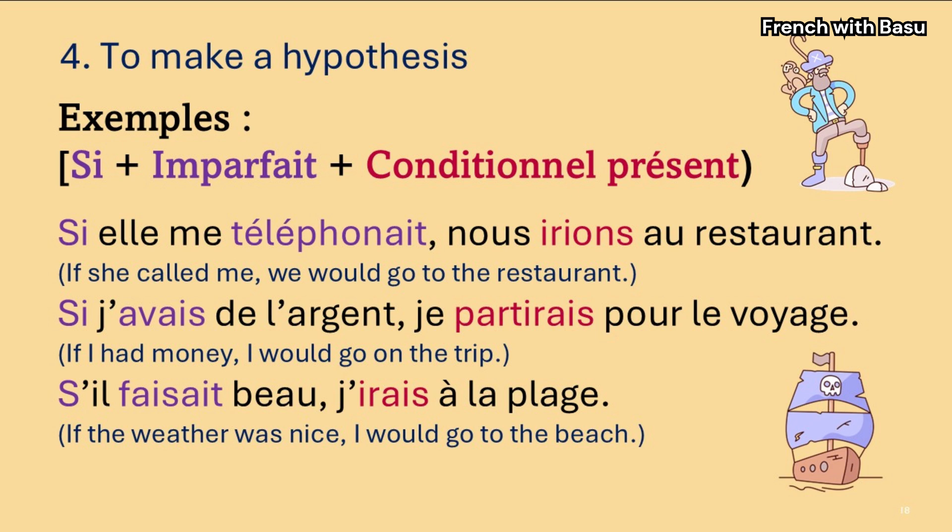Fourthly, and very importantly, we use conditionnel présent to make a hypothesis in the present or in the past. In the present: si + imparfait + conditionnel. For example: Si elle me téléphonait, nous irions au restaurant. The clause starting with si is the condition and the rest is the consequence — the condition is in imparfait and the consequence is in conditionnel présent. Si j'avais de l'argent, je partirais pour le voyage. S'il faisait beau, j'irais à la plage.